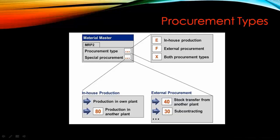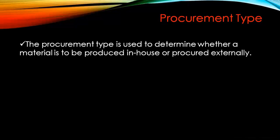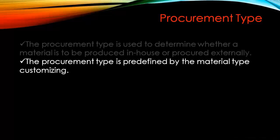Now let's see some theory. The procurement type is used to determine whether a material is to be produced in-house or procured externally. The procurement type is predefined by the material type customizing. Let me show you how you can customize this in the material type settings.